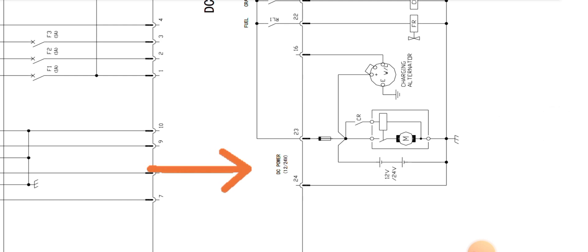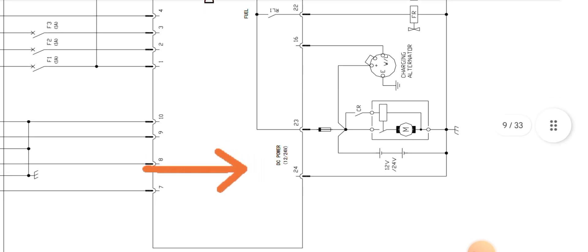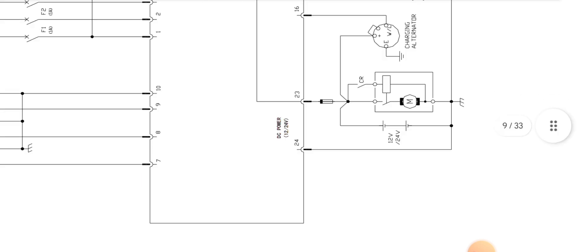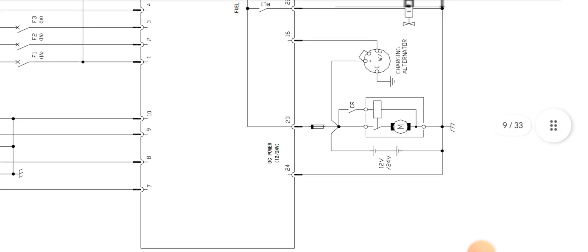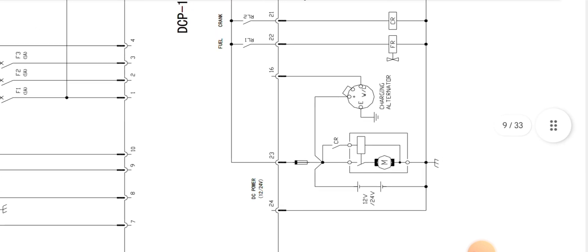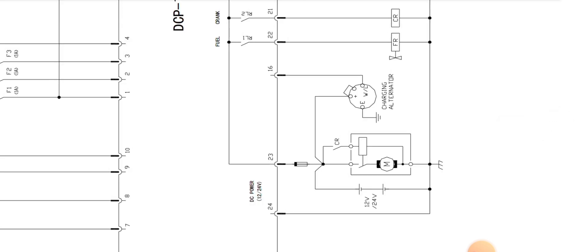Pins 23 and 24: pin 24 is the battery voltage — positive 12V or 24V. Pin 16 is the charging alternator WL warning, connected with the charging alternator and also grounded.